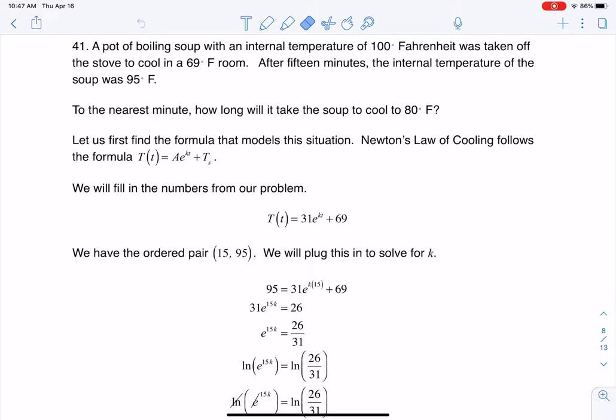Hey Math 31, I had a question coming out of section 6.7 number 41. Here we were told about a pot of boiling soup with an initial temperature of 100 degrees Fahrenheit and it was taken off the stove to cool in a room that was 69 degrees Fahrenheit.